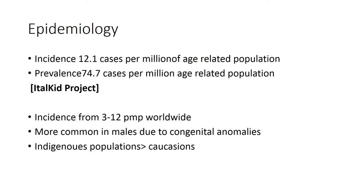Chronic kidney disease in children is more likely to be caused by congenital anomalies, so it is more common in boys — boys are more likely to suffer from things like posterior urethral valves and prune belly syndrome. Indigenous populations such as Aborigines, Native Americans, and also African Americans and Africans tend to have a higher prevalence of chronic kidney disease. Some of the contributing factors may be genetic, and others may be due to socioeconomic factors.